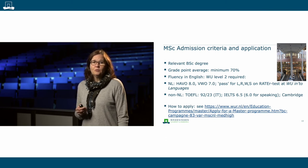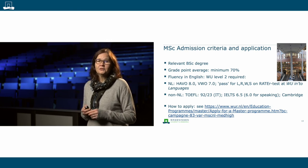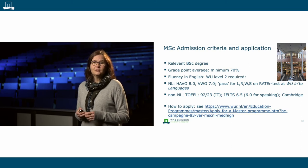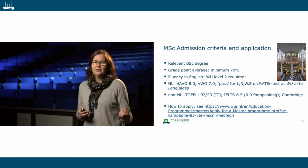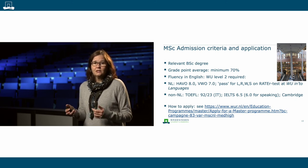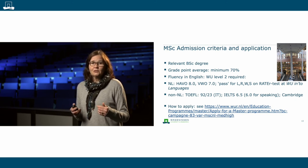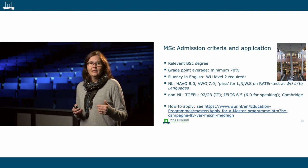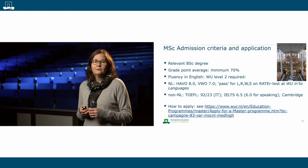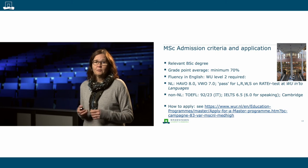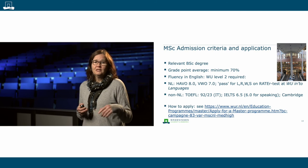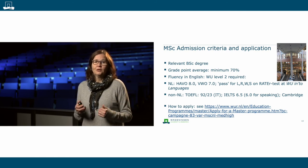What do you need before you can be admitted to the Master of Organic Agriculture? You need to have completed a relevant bachelor degree — this can be in agriculture, but also in social sciences, as long as you have a link with the domain of organic agriculture. You need a grade point average of a minimum of 70% of the maximum obtainable. In the Netherlands, this would be a seven, translated into your local grading scale.